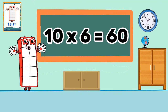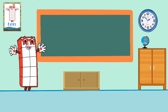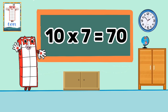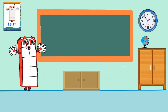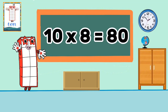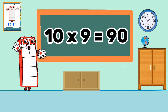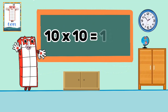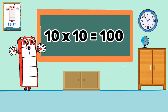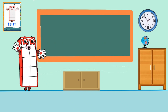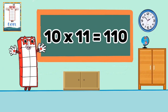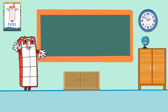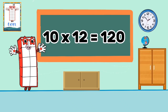10 times 6 equals 60. 10 times 7 equals 70. 10 times 8 equals 80. 10 times 9 equals 90. 10 times 10 equals 100. 10 times 11 equals 110. 10 times 12 equals 120.